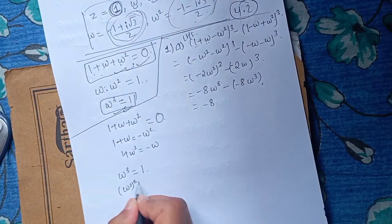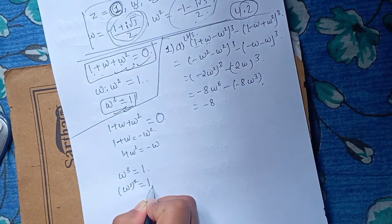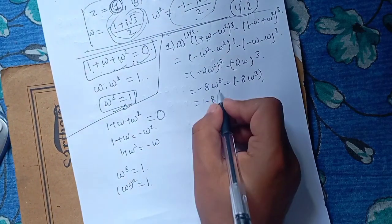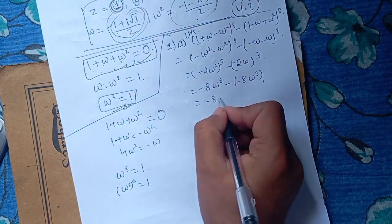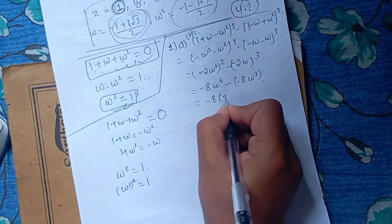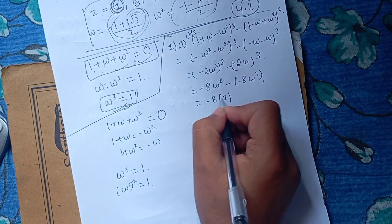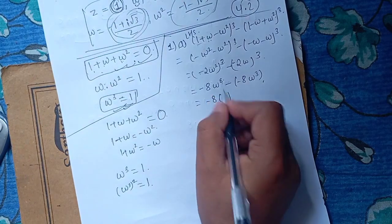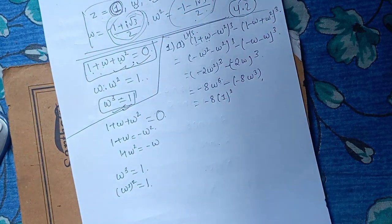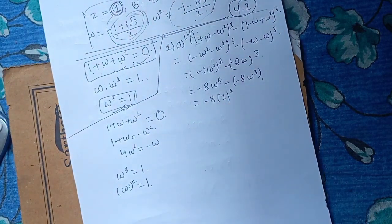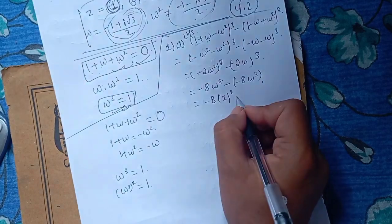Omega cubed squared — what does that give? 1. One. Omega cubed squared is 1. So omega to the 6 gives 1 on the left side. Omega cubed also gives 1 on the list. 1 squared gives 1. Omega cubed squared gives 1.